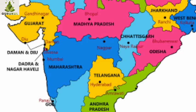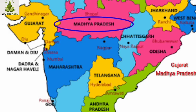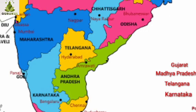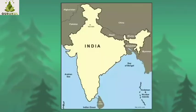Our state Maharashtra is bounded by the Indian states of Gujarat, Madhya Pradesh, Telangana, Karnataka, and others. So in the same way, our country India has neighbors too.